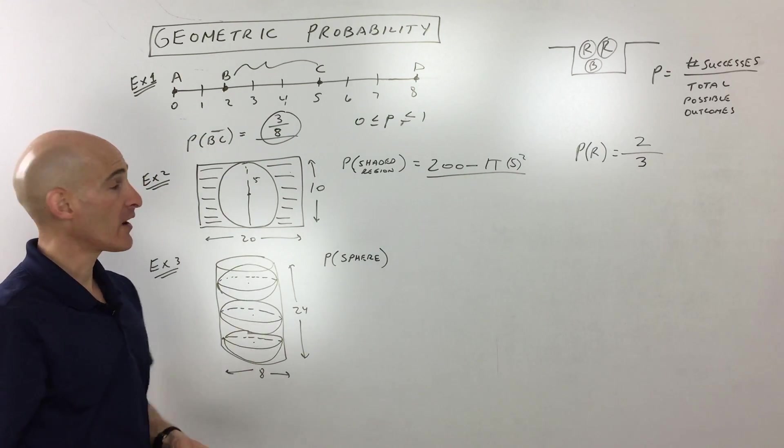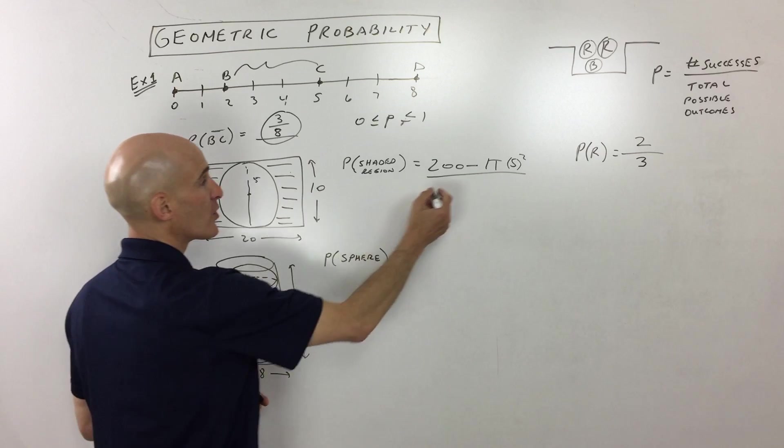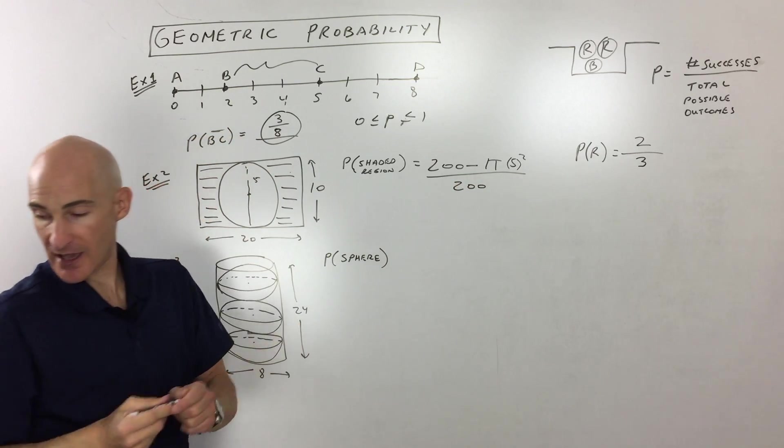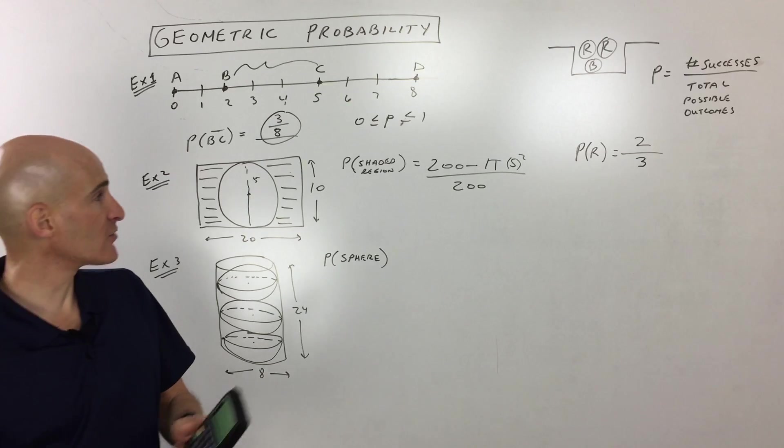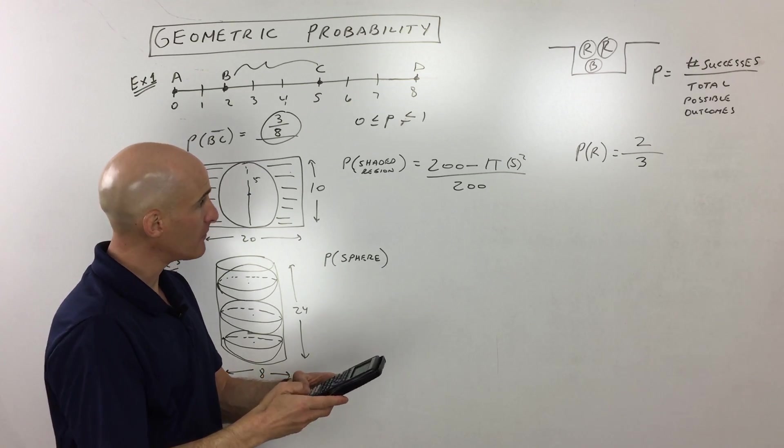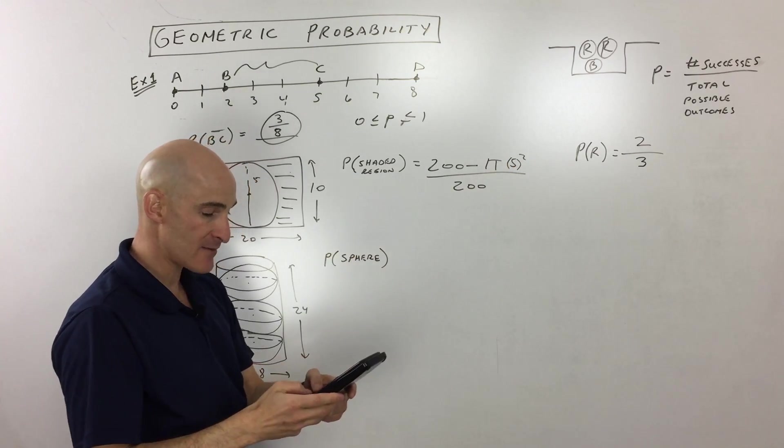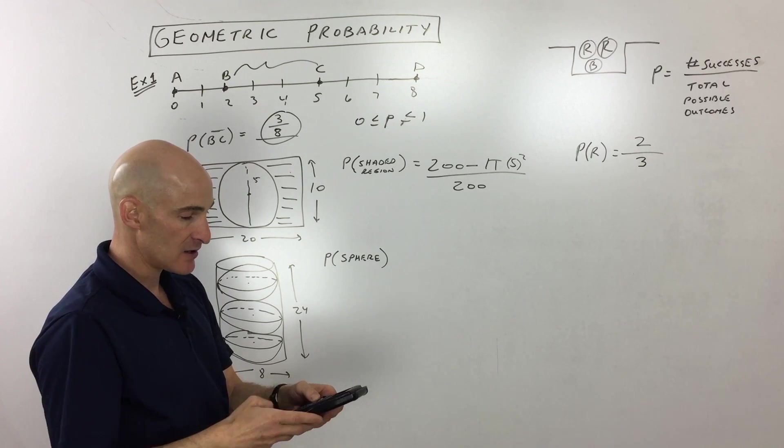Now we're going to divide by the total area, which is the rectangle, 20 times 10, which is 200. So let's go to the calculator. Let's see approximately what that comes out to. We've got 200 minus five squared is 25 times pi, so 25 pi. Let's see here.